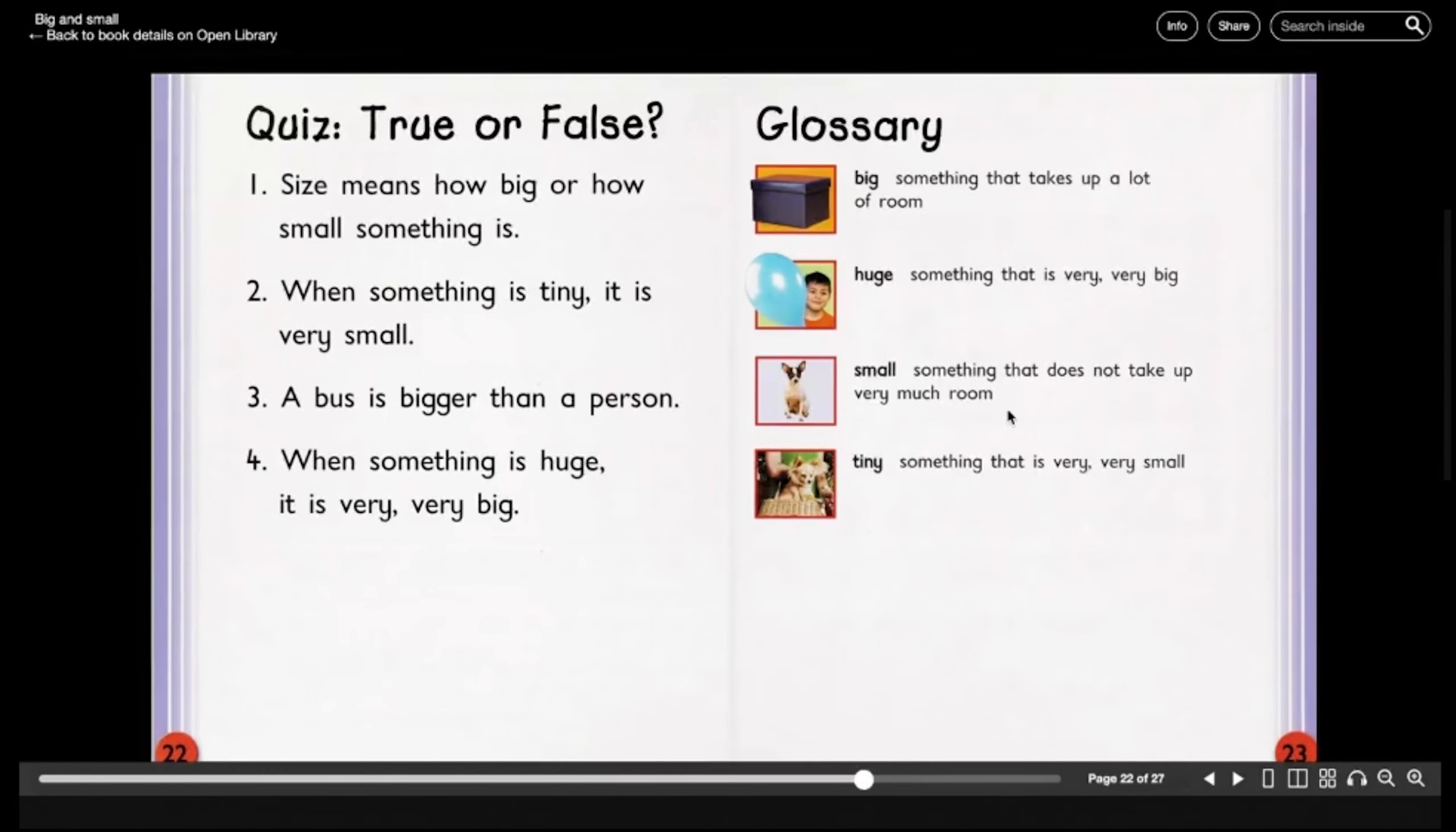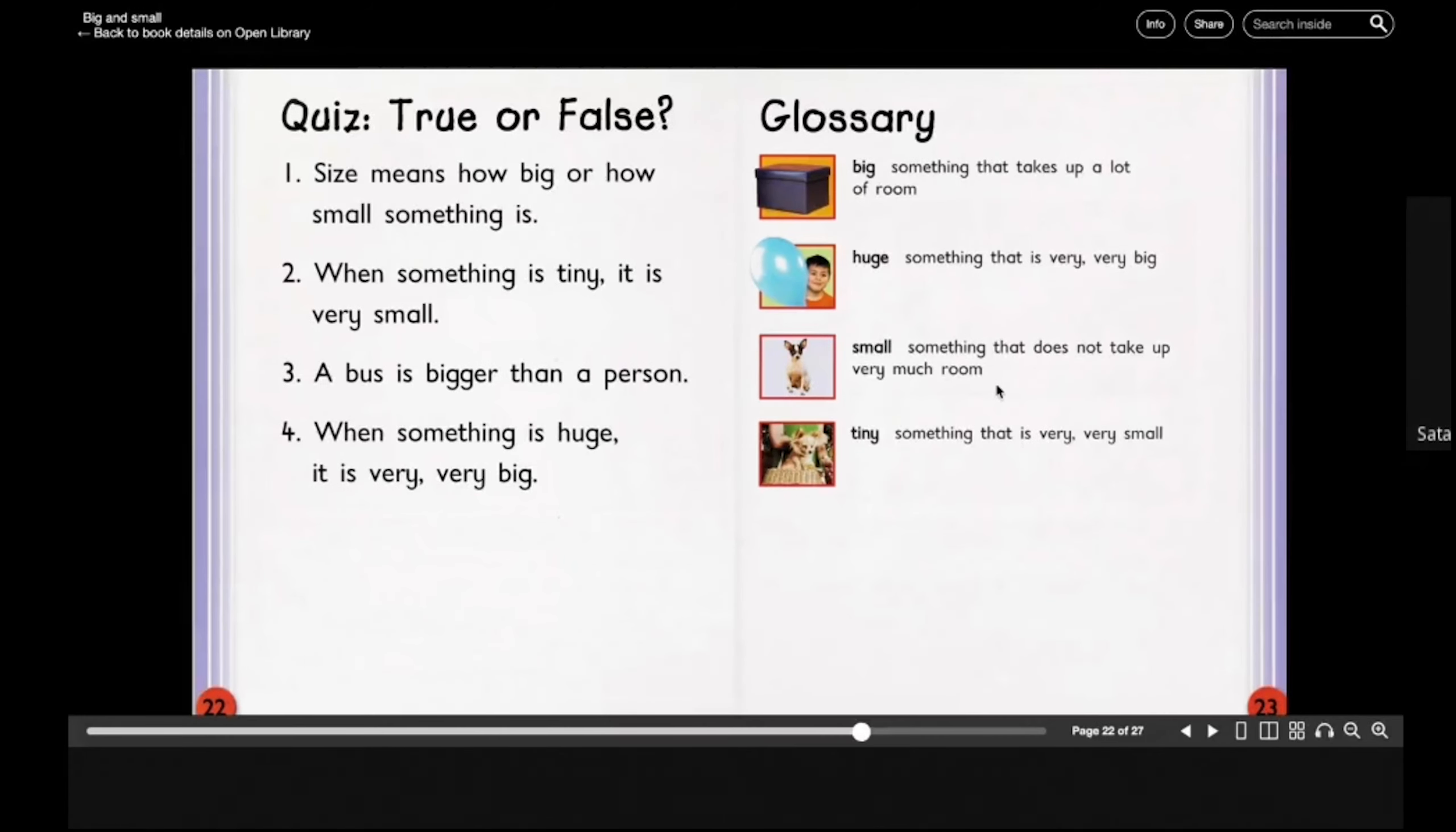Number one, size means how big or how small something is. If you said true, then you are correct. Number two, when something is tiny, it is very small. If you said true, then you are correct again.